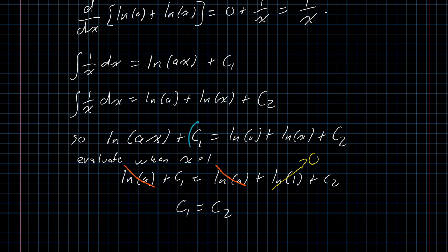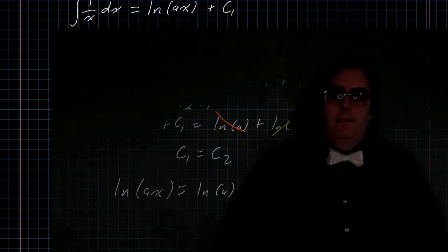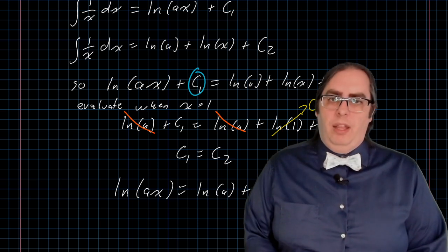From that, going back here, and saying that these two arbitrary constants are equal to each other. Well, subtract that constant from both sides of the equation, and we get that the natural log of ax is equal to the natural log of a plus the natural log of x. It is a required consequence of this weird integral definition of logarithm, which is probably drastically different from how you've seen logarithms defined in the past.